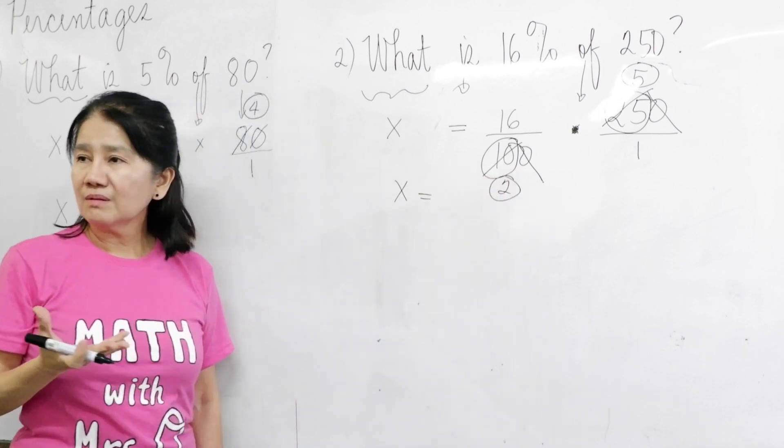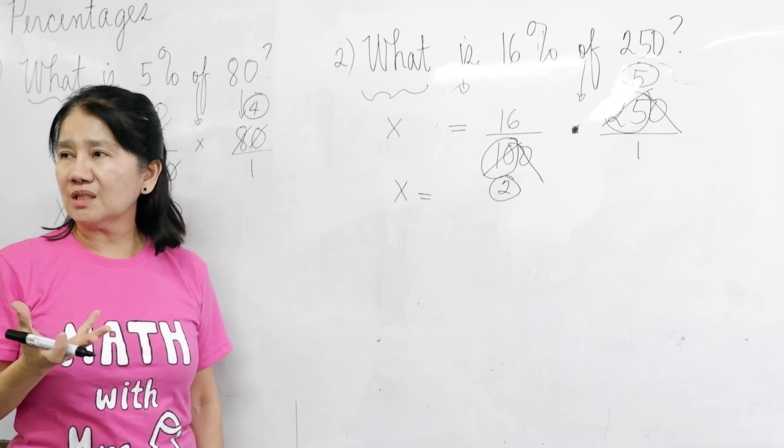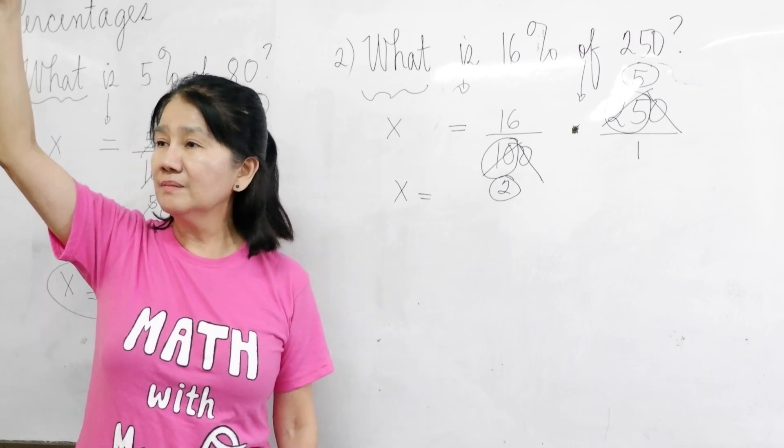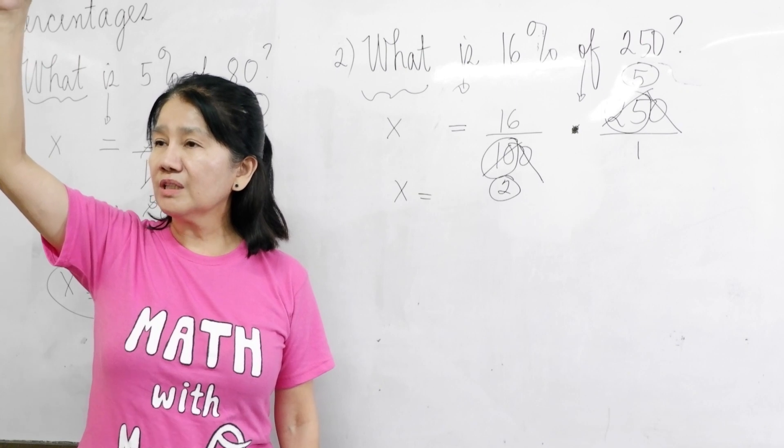Then 10 divided by 5 is 2. And then, what else do you see? Are cancelable. Noah?